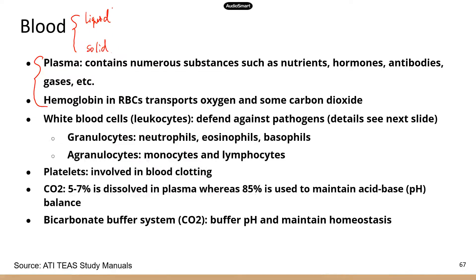The liquid part of the blood is called plasma. You've probably heard that some people can donate plasma and get paid for doing that. The plasma is mostly water, but it does contain a lot of useful substances. For example, most nutrients are dissolved in water, so plasma can contain dissolved nutrients, electrolytes, glucose, and proteins.